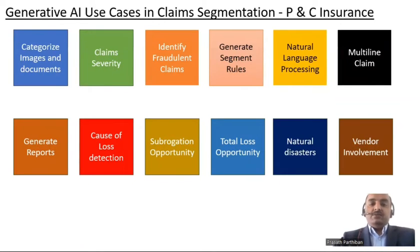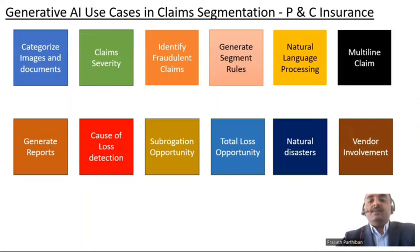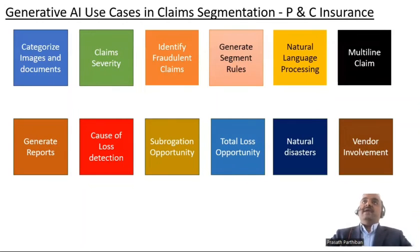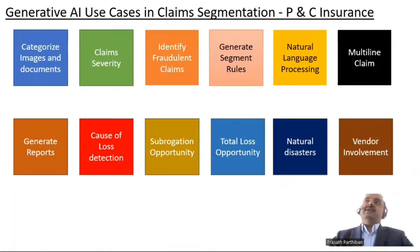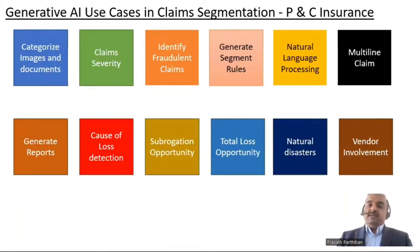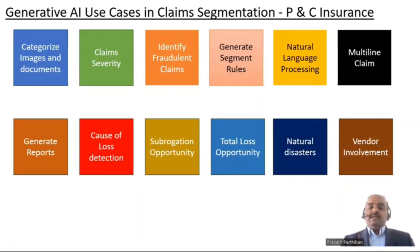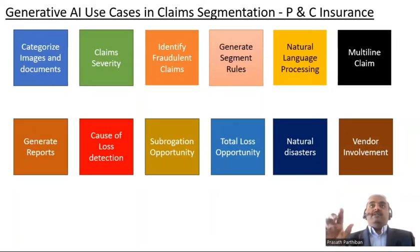Generating segment rules — the main intent of generative AI is to generate content. Based on your historical data, generative AI can suggest different segments to categorize your claims on, so that it can avoid any leakage in terms of segmentation rules.